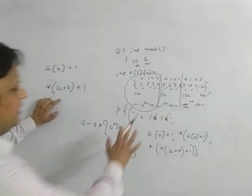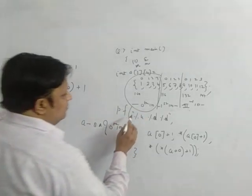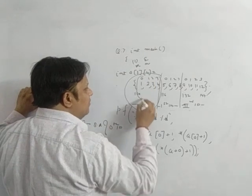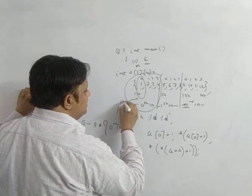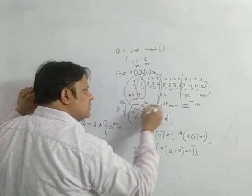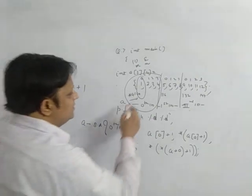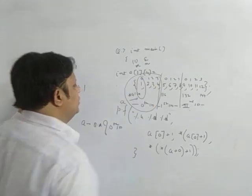Plus 0 it will remain at this. Now there is a star here. Star means it will break this and it will move inside the base address of 0th element. So this is a and this is star a. A means base address of your 0th 1D. Star a means base address of your 0th element.